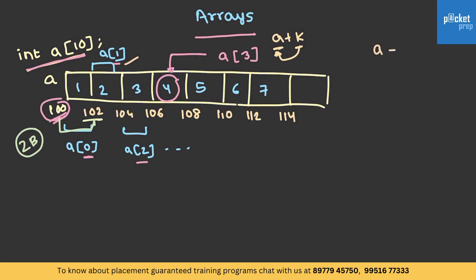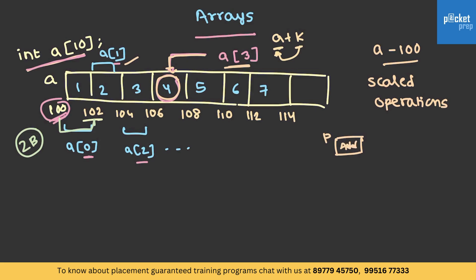We know that array name represents its start address and is used to perform scaled operations. Recollecting pointers: if we have a pointer storing an address, say 100, and I want the content at that address, I can get it with the help of the dereferencing operator. So star P translates to content at address location 100, which in this case is equivalent to 1.